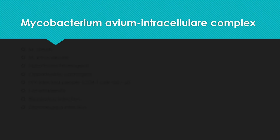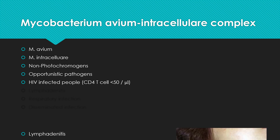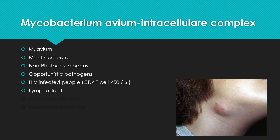Mycobacterium avium intracellulare complex (MAC) is made up of Mycobacterium avium and Mycobacterium intracellulare. It is a complex of these two because they cannot be differentiated. This Mycobacterium is non-photochromogen, meaning it does not produce pigments. It is mostly an opportunistic pathogen, especially in HIV-infected people. When HIV-infected people have less than 50 CD4 T cell count, the chances of MAC infection increase. MAC can cause various manifestations including lymphadenitis, respiratory infection, and disseminated disease, which are the most common ones.